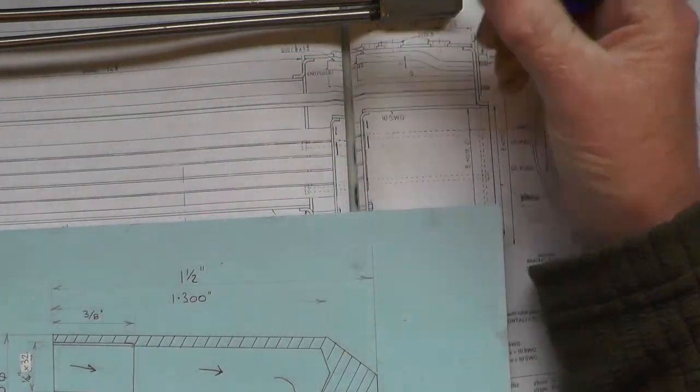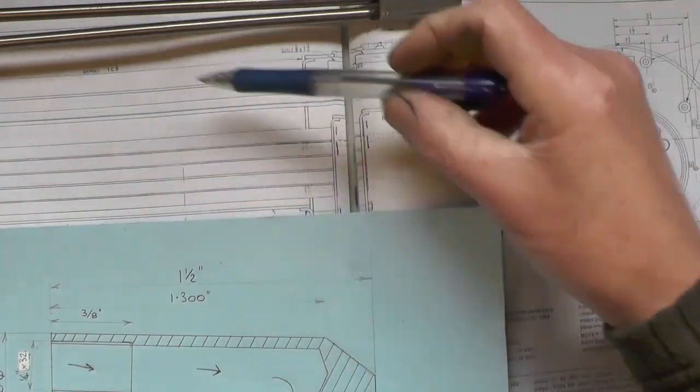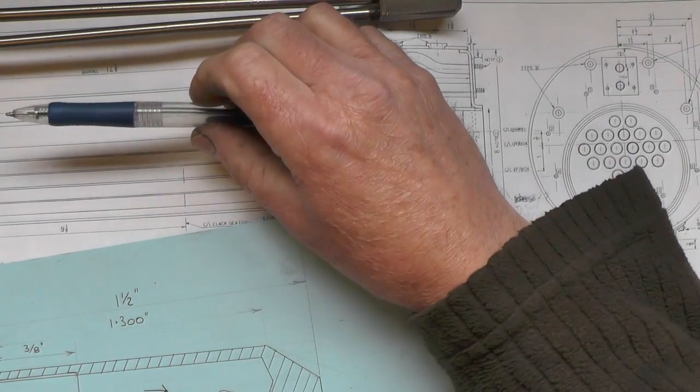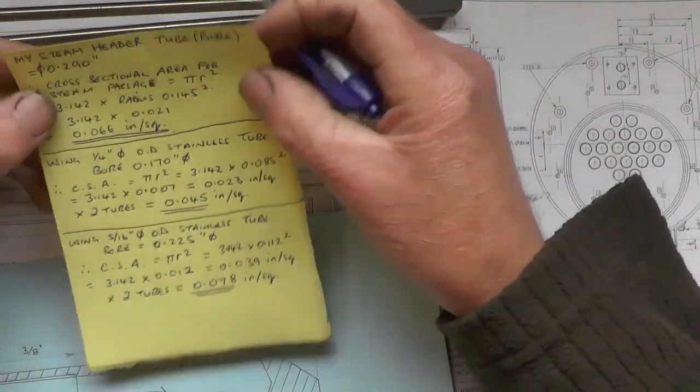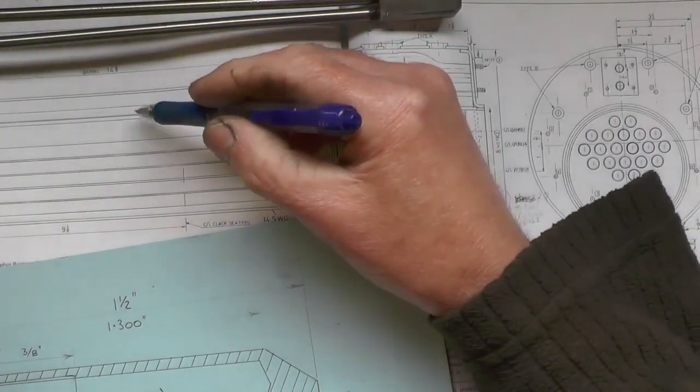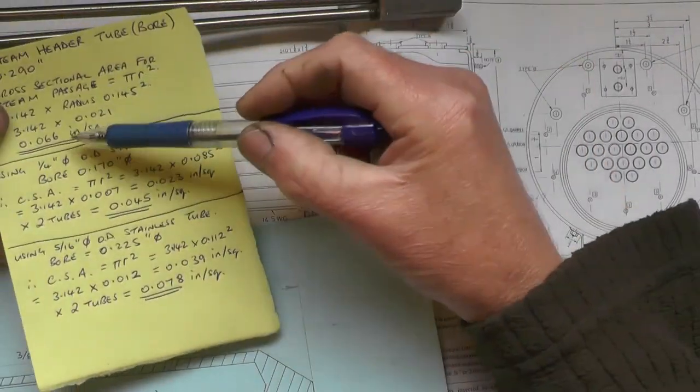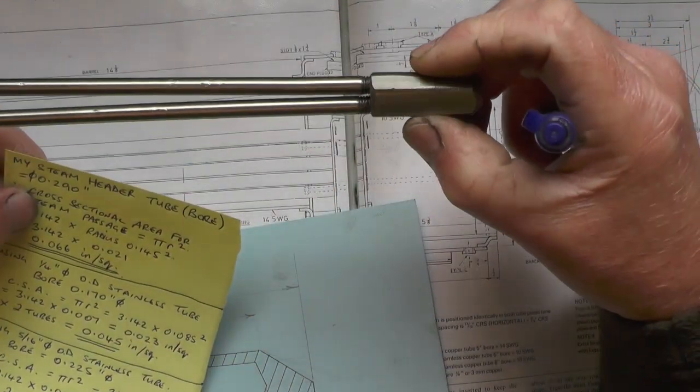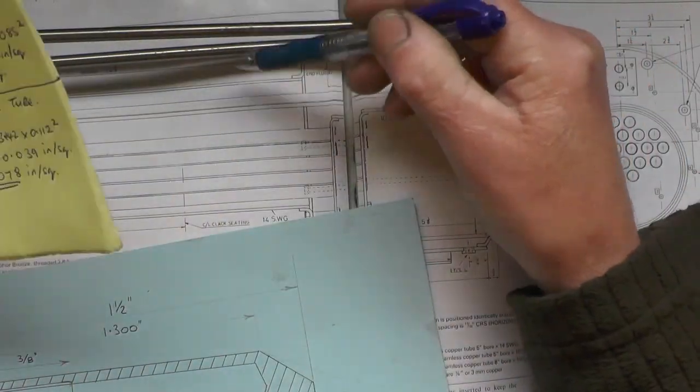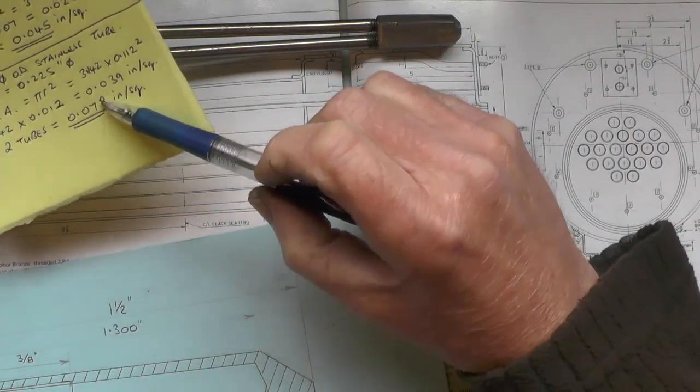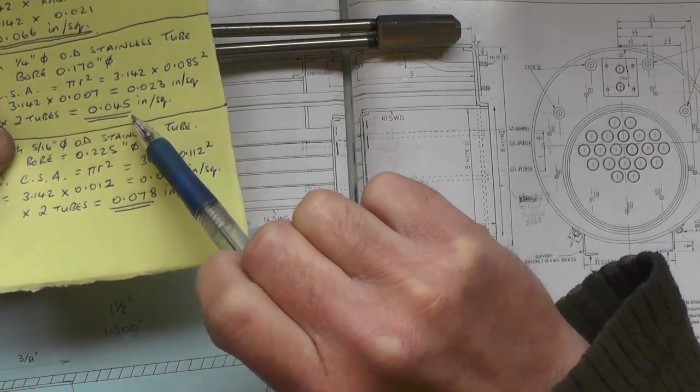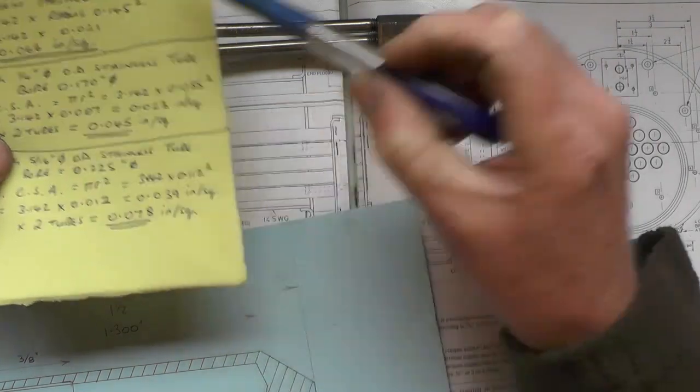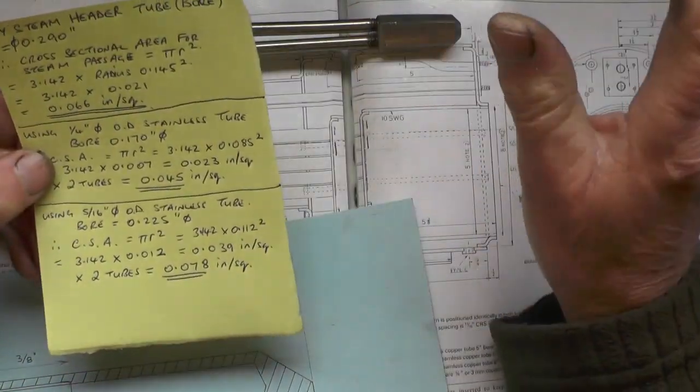I've applied my logic to this and worked out the cross section of my steam header tube, and that came to 0.066 inches squared. When I worked it out for the stainless tube bore, with two of them, both tubes came to 0.045 inches squared cross section, which is less than my steam header tube. So I don't know if that matters or not.